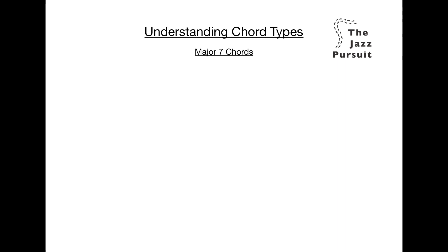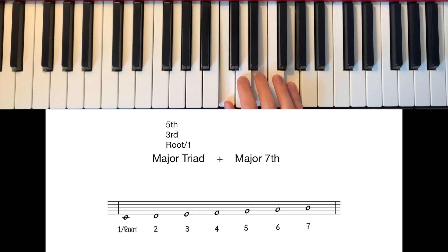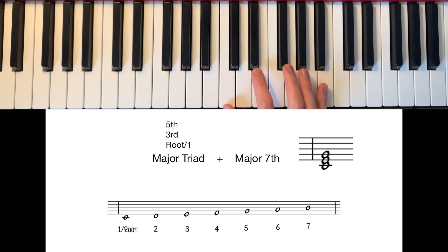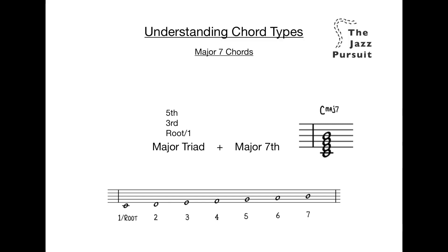First, let's start with major 7 chords. A major 7 chord is made by a major triad — the root, 3rd and 5th of the chord — plus the major 7th. Let's see what that would look like in the key of C major. Here's our C major scale. We need our major triad: the 1st, 3rd and 5th note from the scale, which is C, E and G. On top of this we need the 7th note from the scale, which is B. This creates our C major 7 chord: C is the root, E is the 3rd, G is the 5th and B is the 7th. An easy way to think about major 7 chords is that everything in them is major, hence the name major 7.